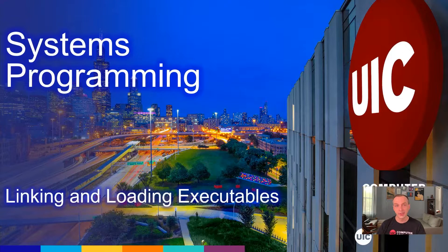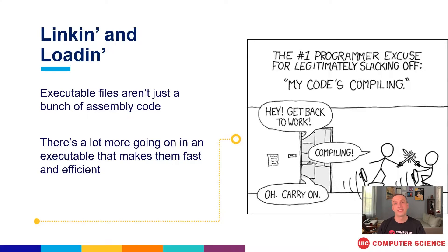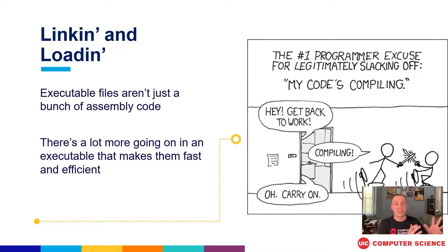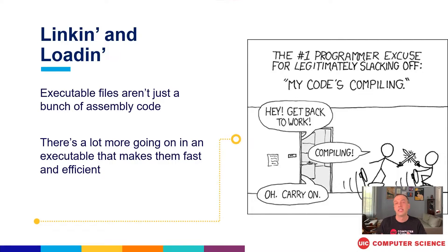Today we're going to be talking about linking and loading executables. If you read the book for this section of class, or even if you haven't, one thing it doesn't really go over too well is why we care about this. You would think from what you've looked at before in CS261 that we go from C code, run the compiler, it does its compiler magic turning that into assembly, and then we have a processor that starts at the first instruction and runs each instruction. That sounds like our job should be done — you compile the code, you tell it where to start, and you're good to go.